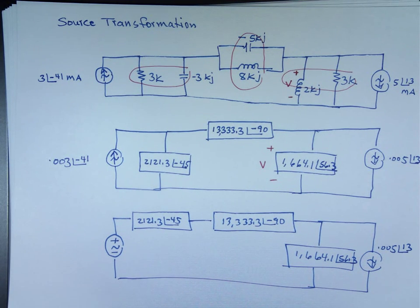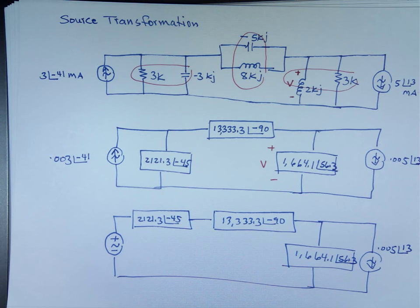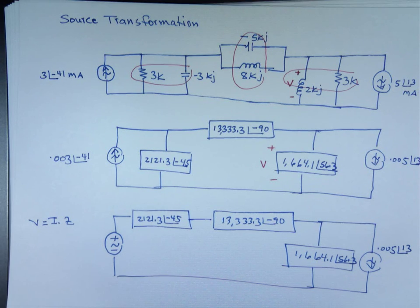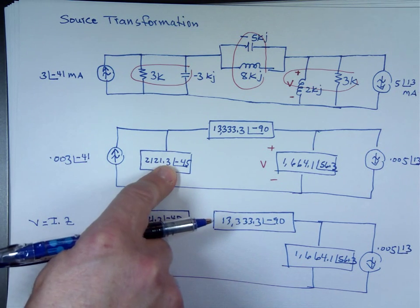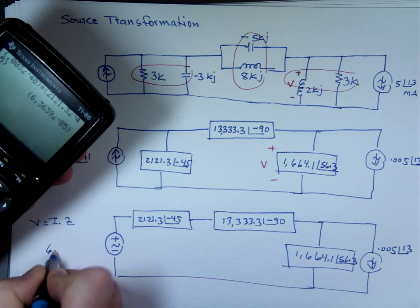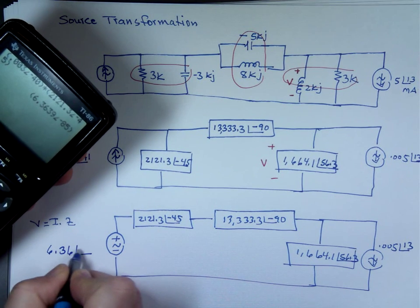And the question, what's the value of this source? Just like resistors, you have a current, you have a resistor, where is the voltage? V equals I times Z, Ohm's law. 0.005, this is I, and that's Z. So multiply them, 0.003 angle negative 41 times 2,121.3 angle negative 45. 0.005, and the value of this source is 6.36 angle negative 85 degrees.